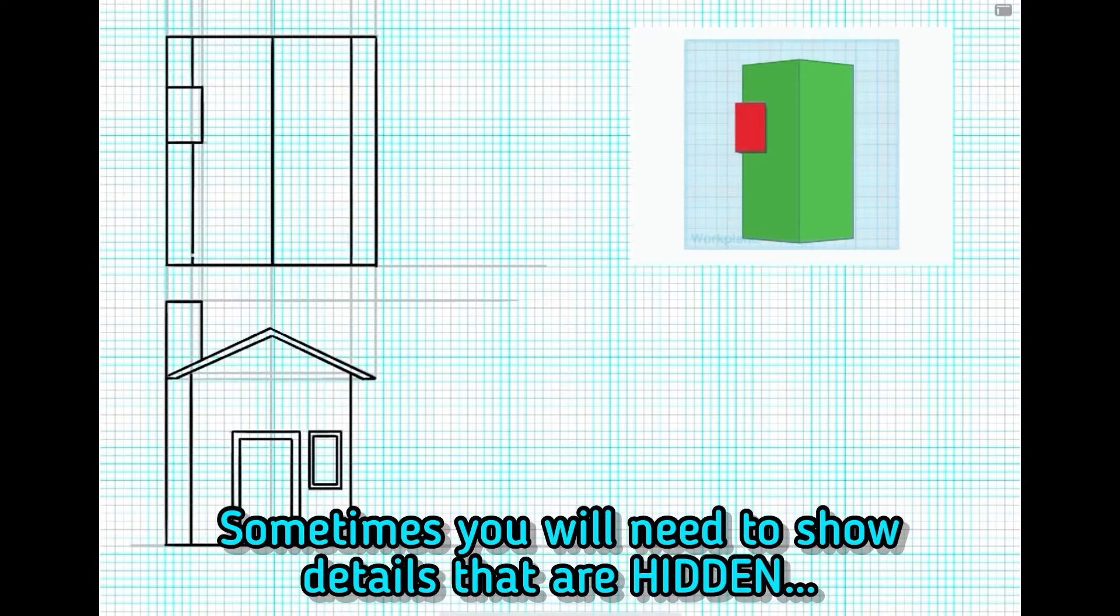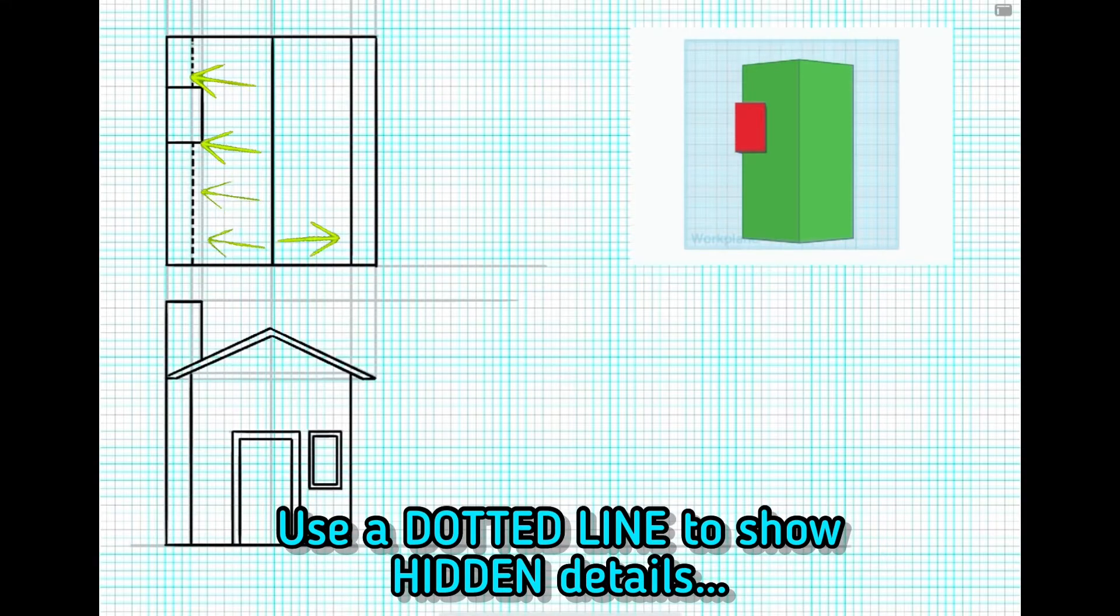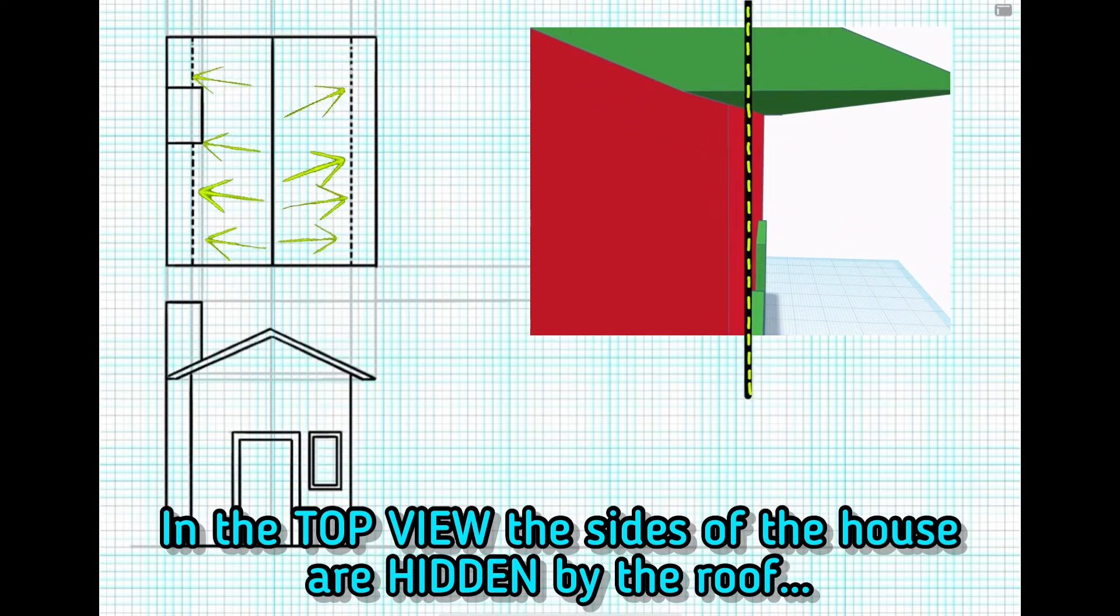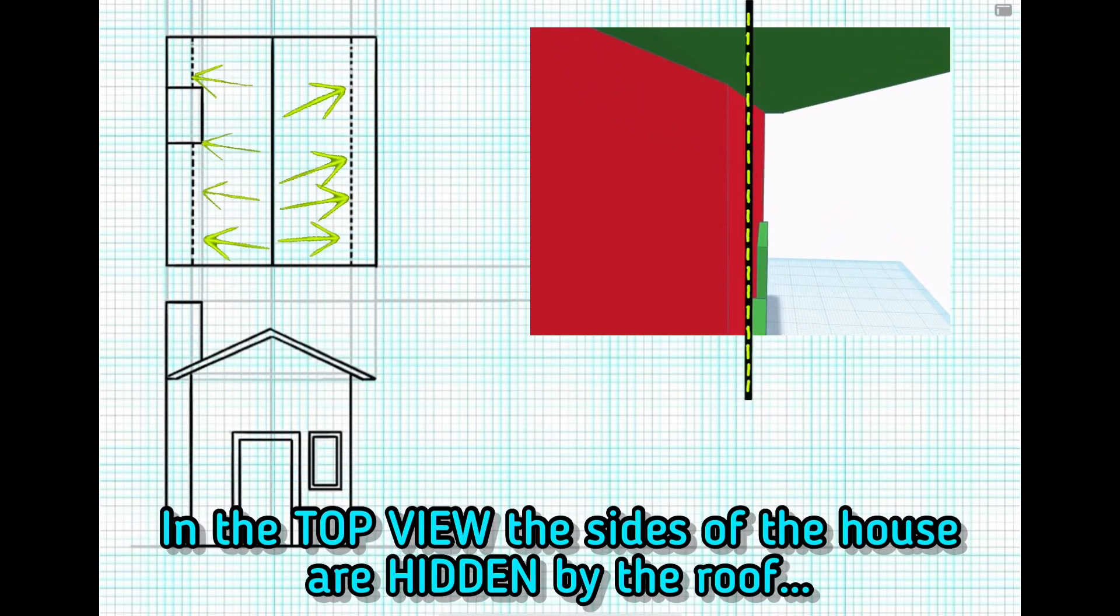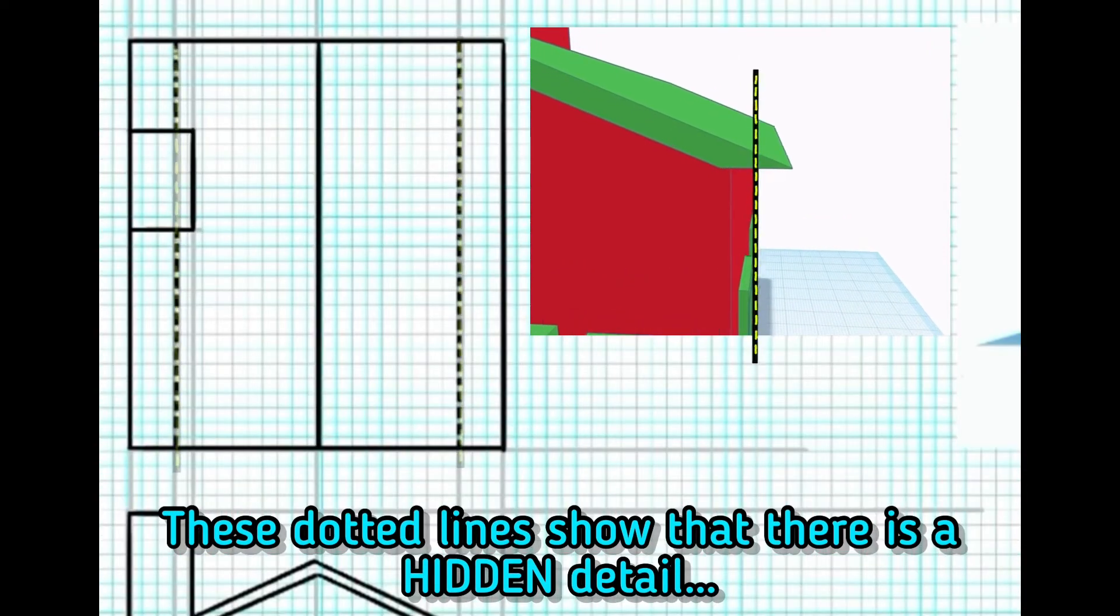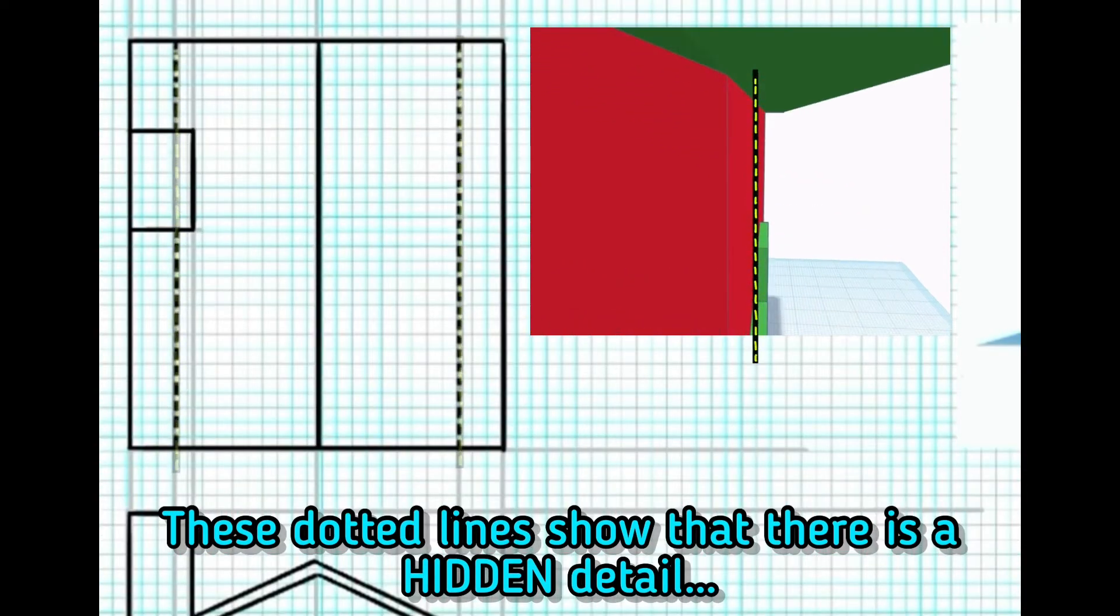Sometimes you'll need to show details that are hidden. Use a dotted line to show hidden details. In the top view, the sides of the house are hidden by the roof. These dotted lines show that there is a hidden detail.